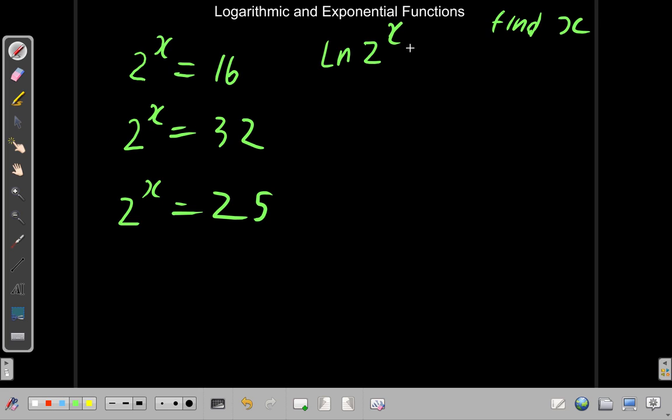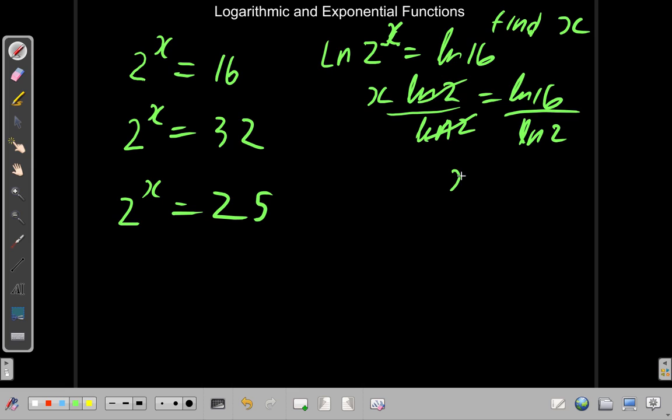ln 2 to the x is equal to ln 16. Now, you remember that ln of 2 to the x would be x ln 2. The ln of a number raised to a power is equal to the power times the ln of the number. And we discussed that in a previous video. So here, we say it's x ln 2 equals ln 16. So if you divide both sides by ln 2, then ln 2 will cancel itself. So you get x is equal to ln 16 divided by ln 2.